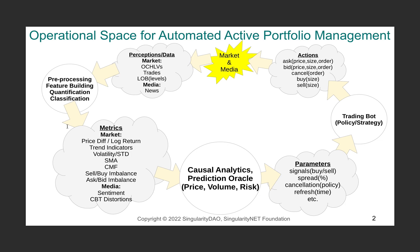These metrics are turned into predictions, and predictions are turned into parameters used to identify strategies for trading bots, which perform trading or market making activity, turning these parameters into particular actions in the market. The data then feeds back to affect the markets, and we continue to run this circle.